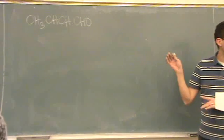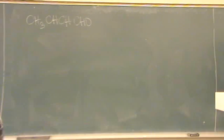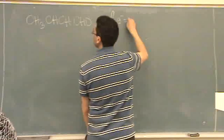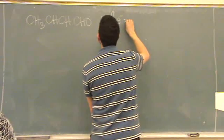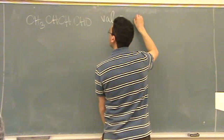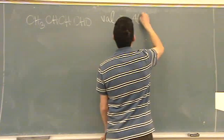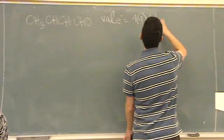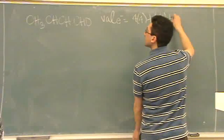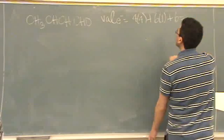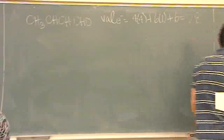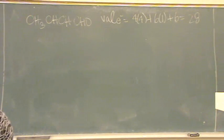Okay, did I draw it right? Yeah. Okay, so valence electrons. There's one, two, three, four carbons, and they're all four, plus one, two, three, four, five, six hydrogens at one, plus one oxygen at six. So that's sixteen plus twelve, twenty-eight. Is that what you got? Yep. Okay, so twenty-eight.